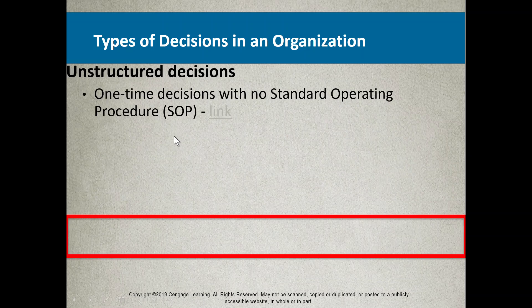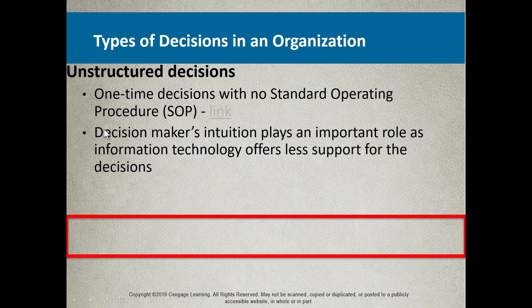Now let's move to the third decision structure: unstructured decisions. These are decisions that have no real formal base — usually a one-time decision. Companies don't develop an SOP because this type of event is so rare. Unstructured decisions tend to come from upper management, but can come from all levels depending on the type and importance of the decision. Information technology and MIS systems don't provide any real information decision makers can use for these.